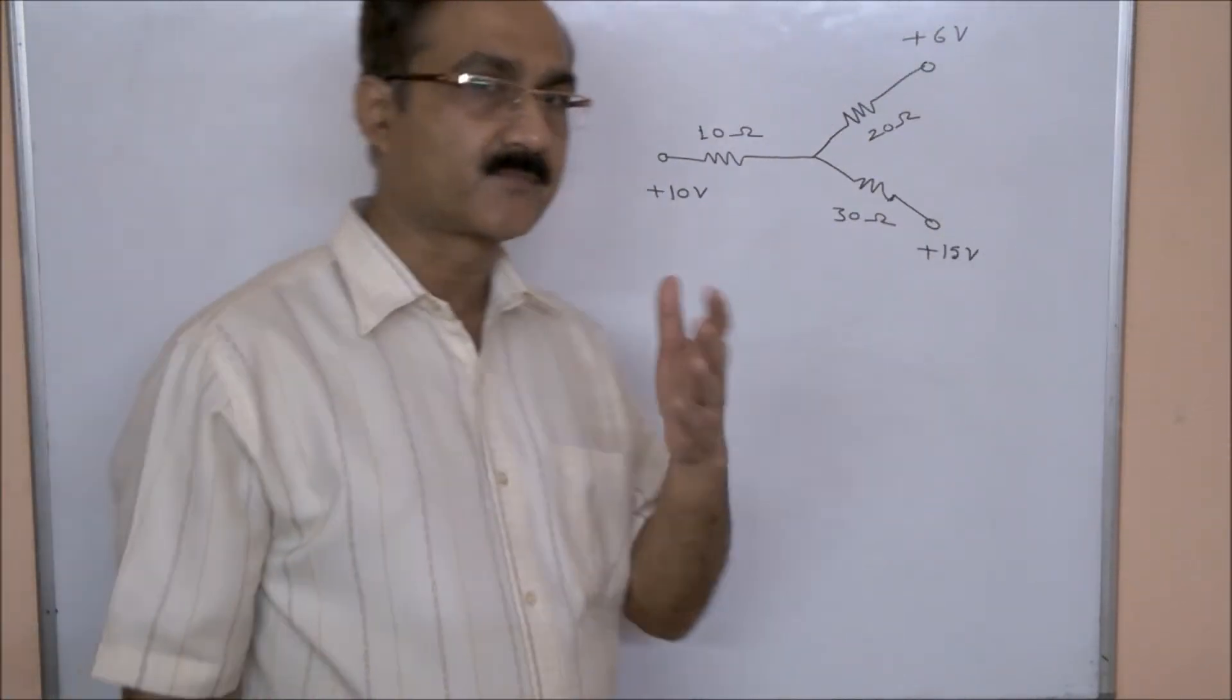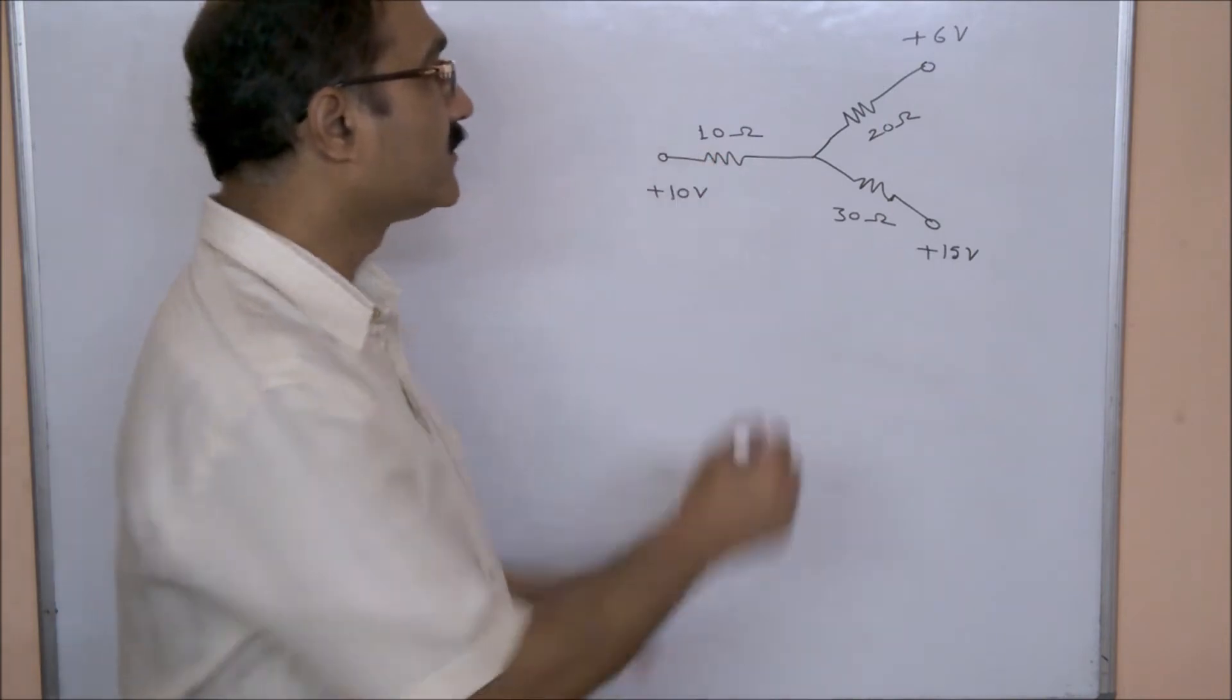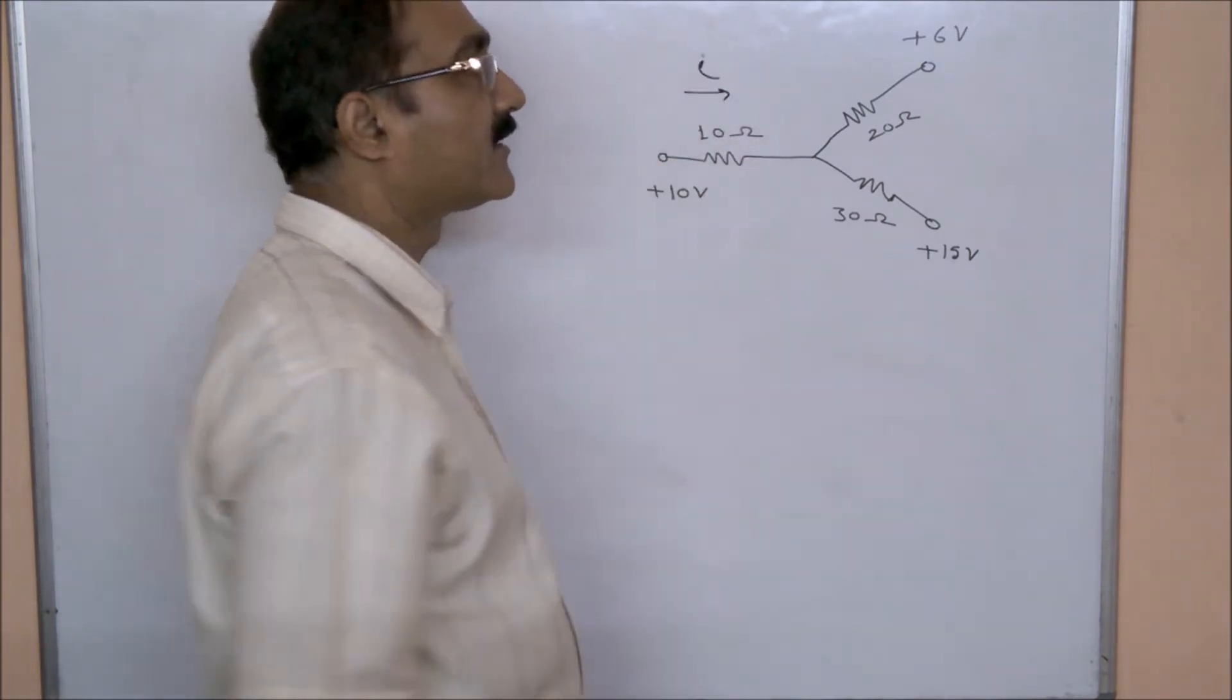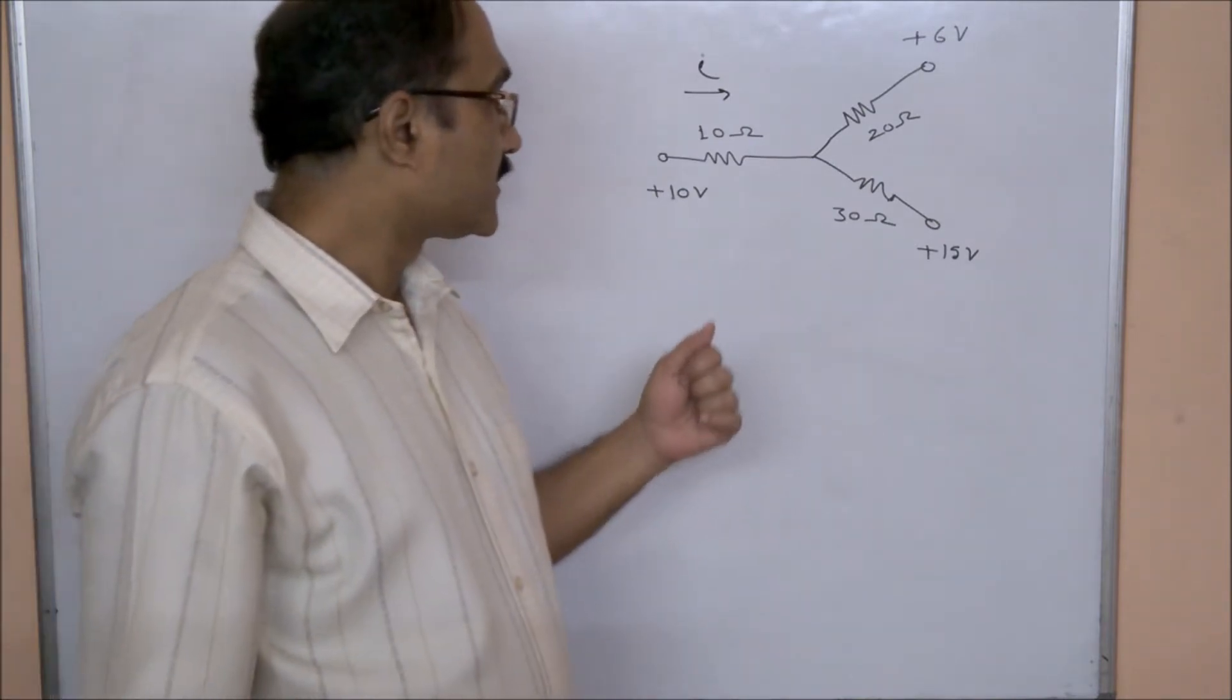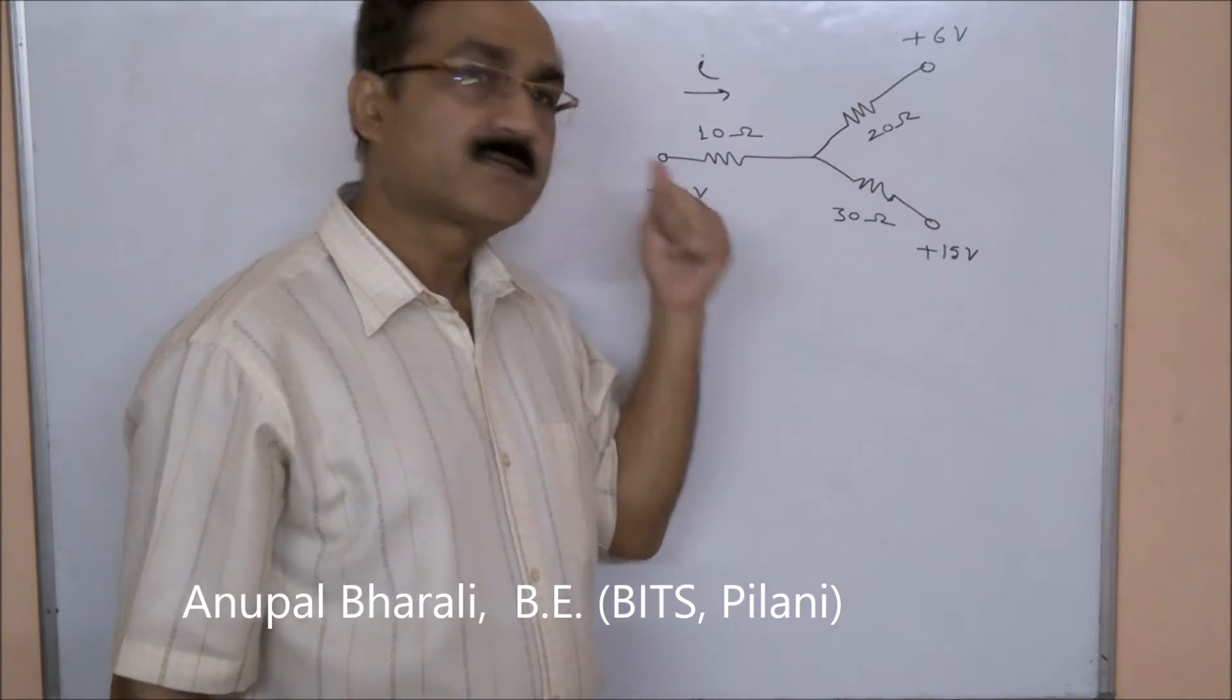This is an interesting problem. We have to find the current flowing through this resistance of 10 ohms. Let's call it I. Now see, these three voltages are given, these three resistances are given.